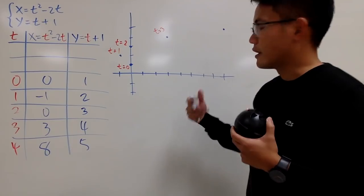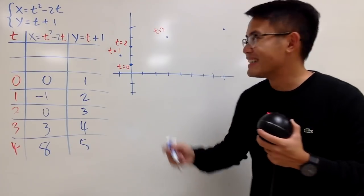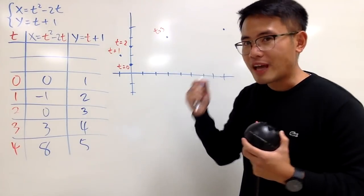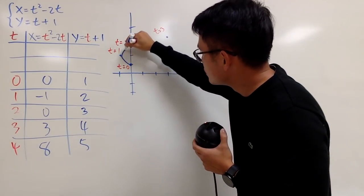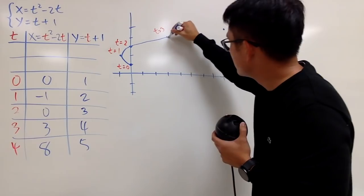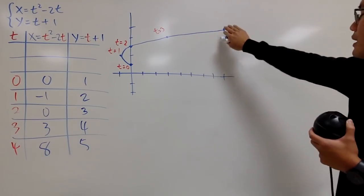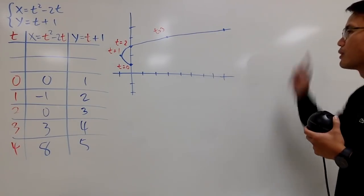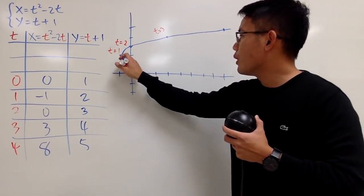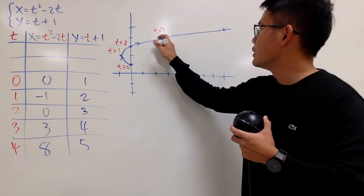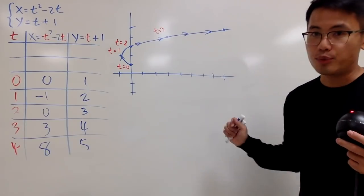I'll just connect the dots with a curve. You can imagine you're like fast and furious — you start here, and when time starts you make a really sharp turn, swooping like this. That's pretty much the curve. You can extend it further. We'll also put down arrows to indicate the direction of travel along the curve.